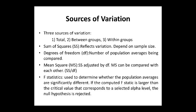The F-statistic is used to determine whether the population averages are significantly different. If the computed F-statistic is larger than the critical value corresponding to the selected alpha level, the null hypothesis is rejected.